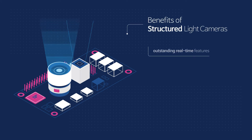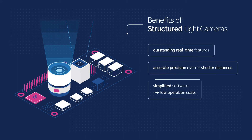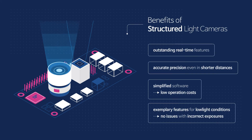Structured Light Cameras differ from conventional stereo-based or radar-based ones in that software is much more simplified while real-time recognition capabilities are more enhanced, equating to more precision even in low-light conditions.